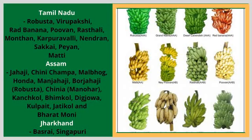Banana varieties grown in Assam include Jahaji, Chinikampa, Malbhog, Honda, Manjahaji, Borjahaji, Robusta, Chinia, Minahar, Kanshkal, Bimkl, Digjoa, Kopt, Jitakal, and Bharatmani.